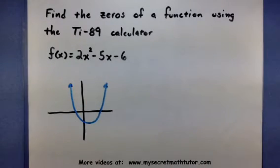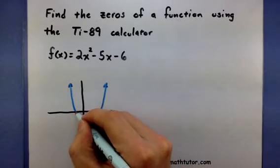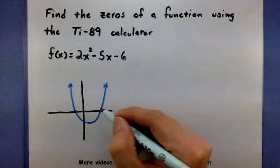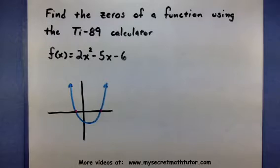Now the zeros, those places that we're looking for, are where this graph crosses the x-axis. And there's going to be two that we're going to be looking for.